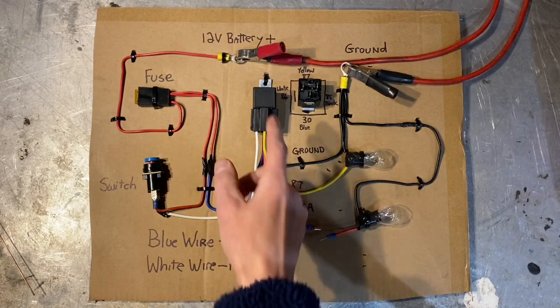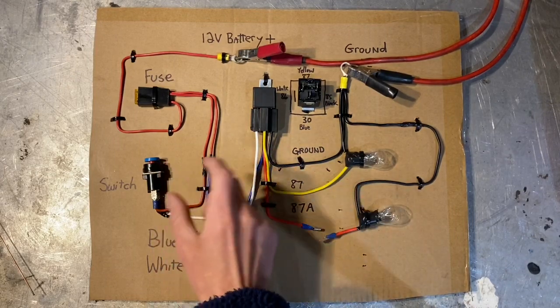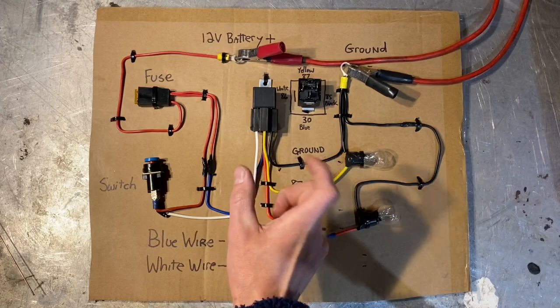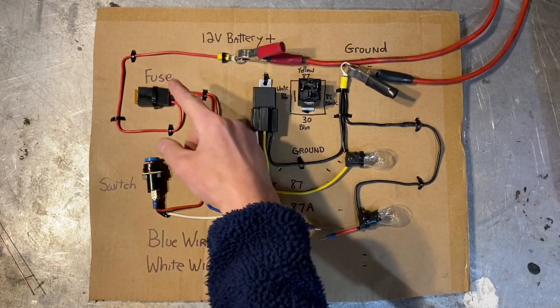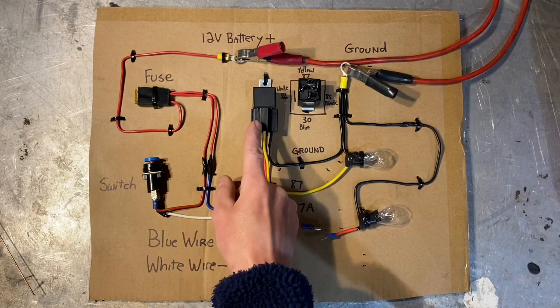That is what controls the power going from 30 to 87, because all you're doing with a relay is you're jumping power from pin 30 to pin 87, and you're controlling it with the 86 and 85 circuit. So once again, power comes in through a fuse to your switch, and then from your switch to pin 86.